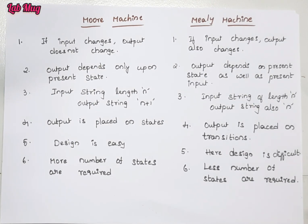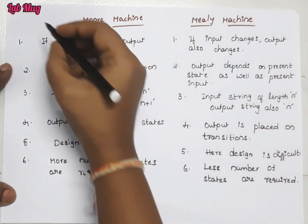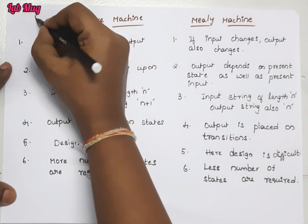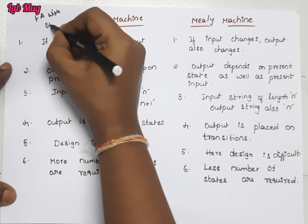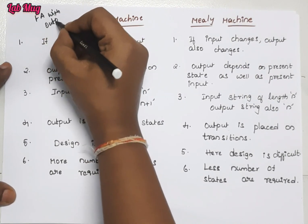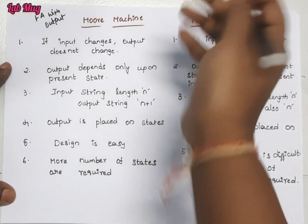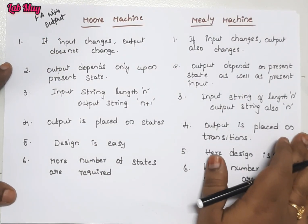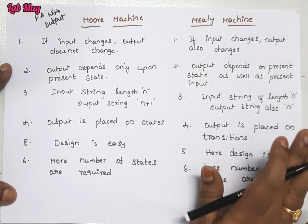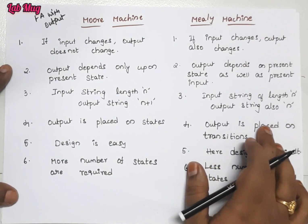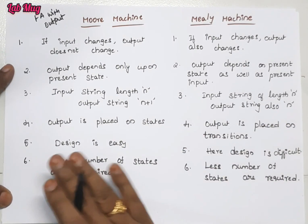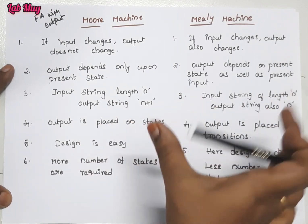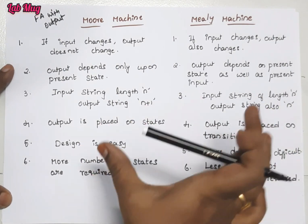The first common point is finite automata with output. In that category, we have Moore machine and Mealy machine. Finite automata without output includes DFA and NDFA. So in the 'with output' category, Moore machine and Mealy machine are both present.